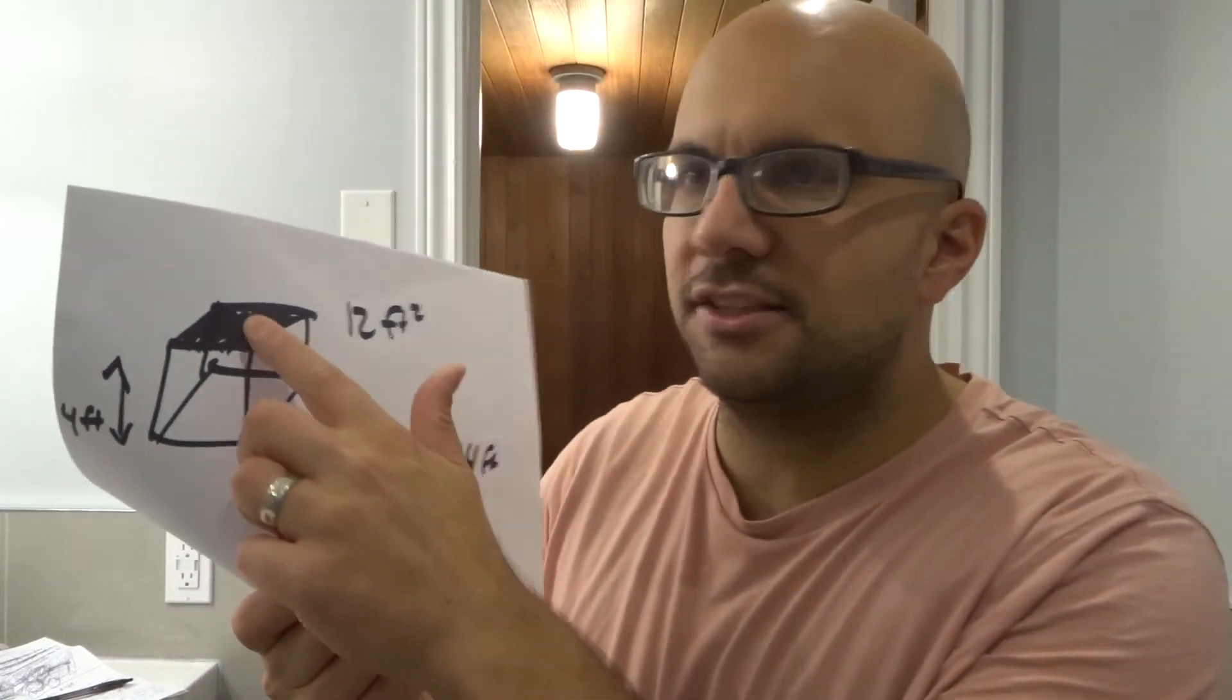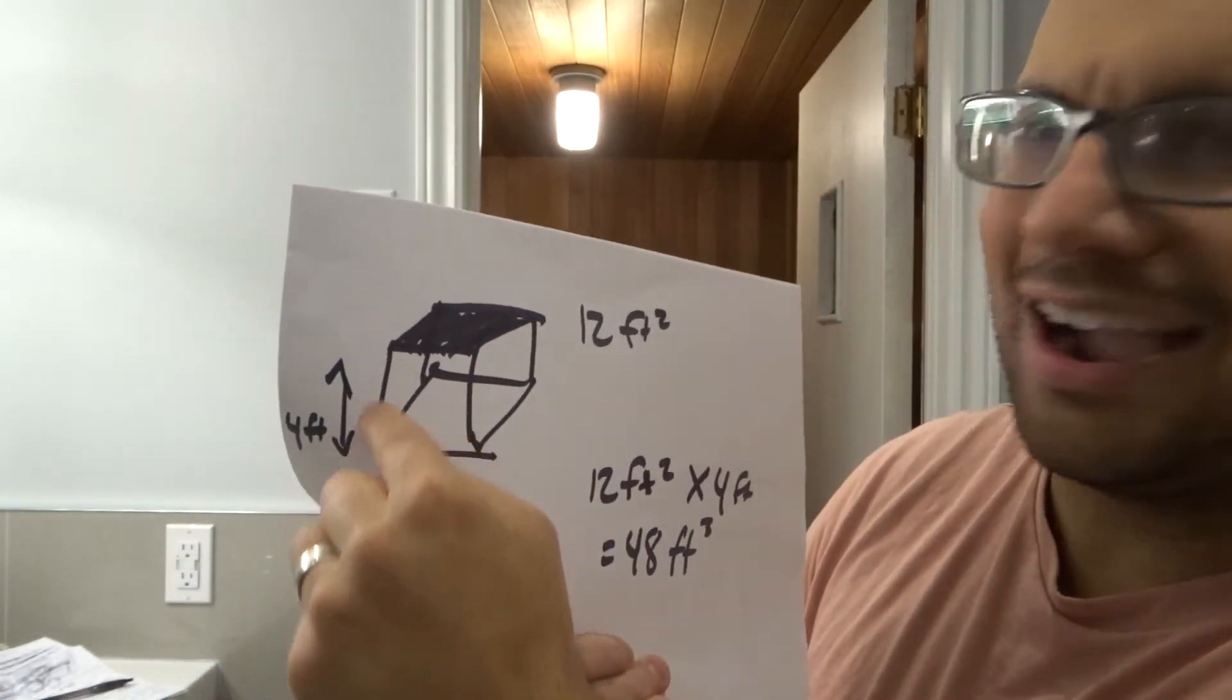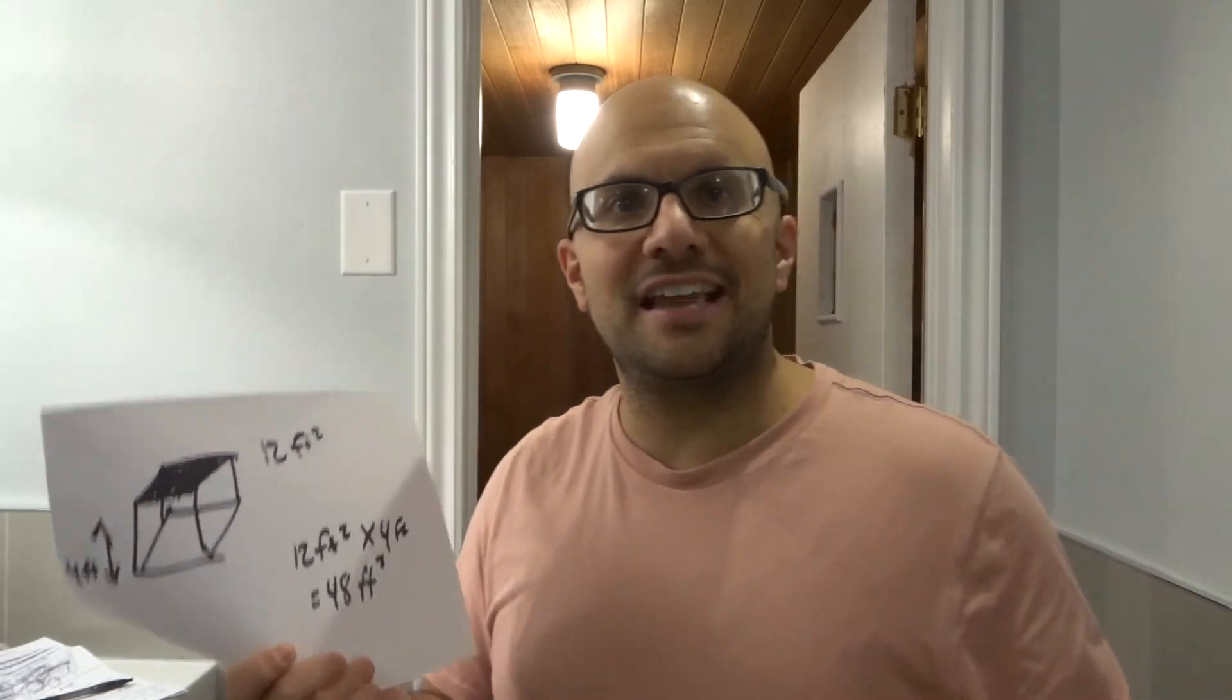All you need is an additional measurement. You take the square footage, add in your height, and multiply those numbers together. There you go - you now have cubic feet.